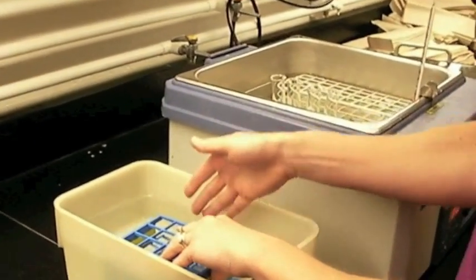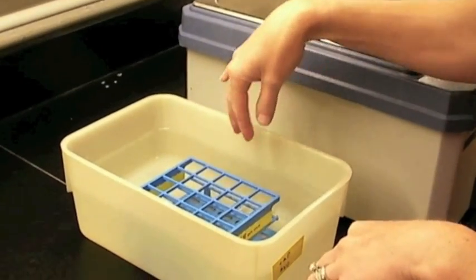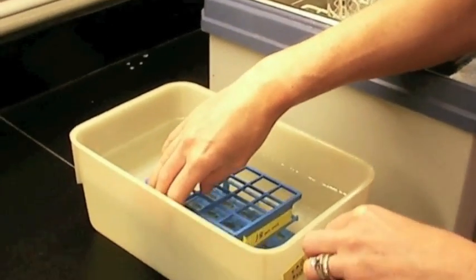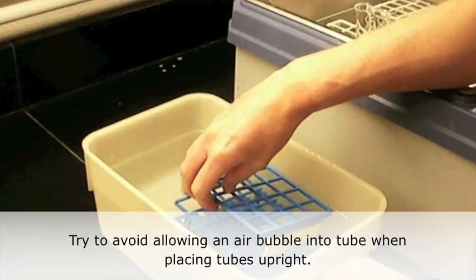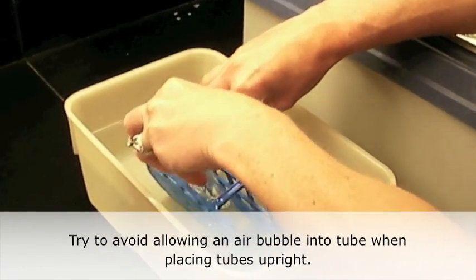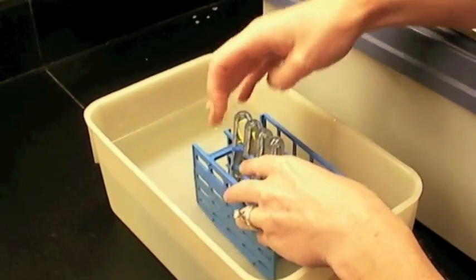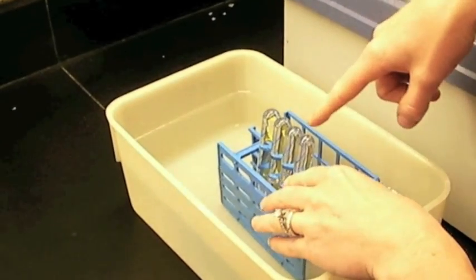Alright, so horizontally I have put all of the tubes down in the water bath, and they all look like they are filled with water. Now, keeping the tubes inside the test tube rack for support, I'm going to flip the tubes right side up, and they should be filled all the way with water.